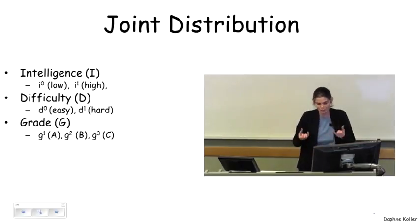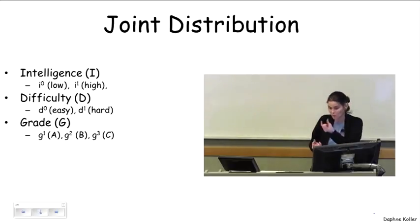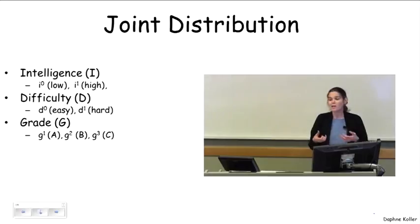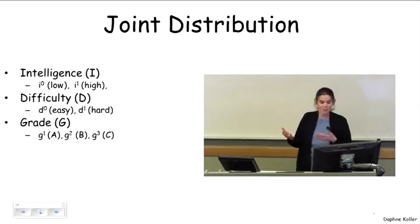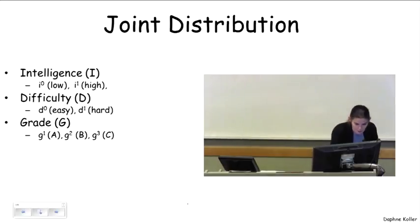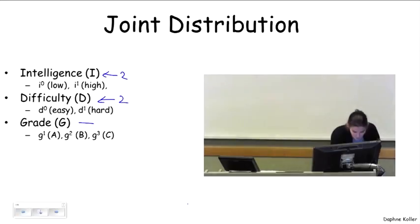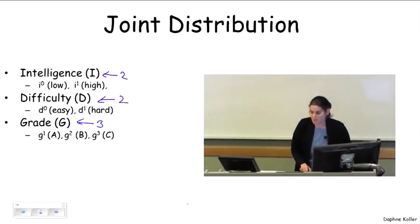You have a student who can be described by a variable representing his intelligence, and that could be high or low. The student is taking a class, the class might be difficult or not. So the random variable I has two values, difficulty variable D also has two values. And then there is the grade that the student gets in the course, and that has three values. In this case, we're going to assume A, B, and C.